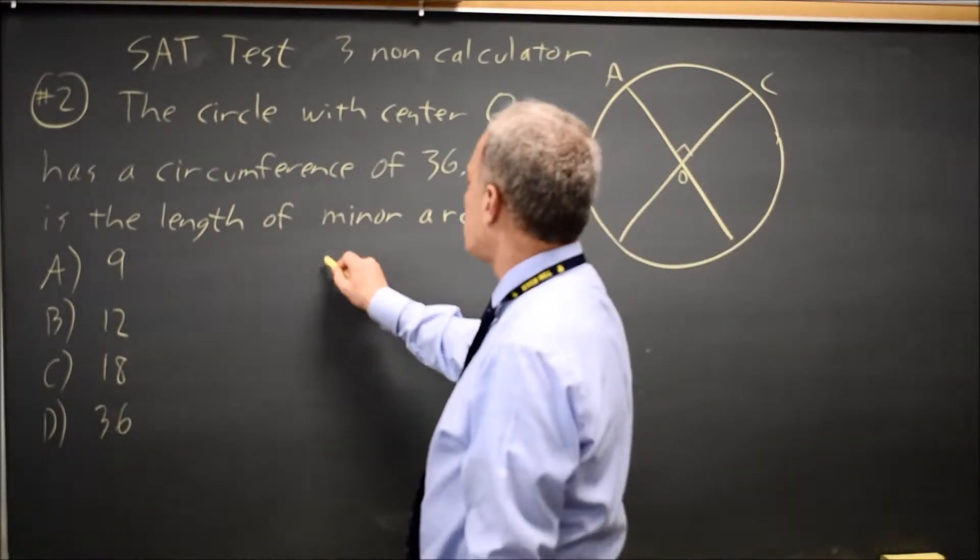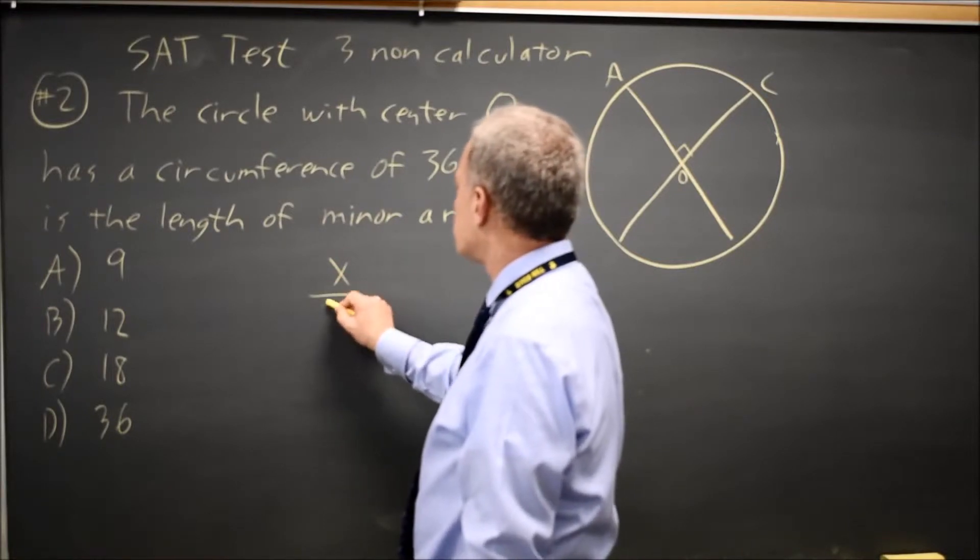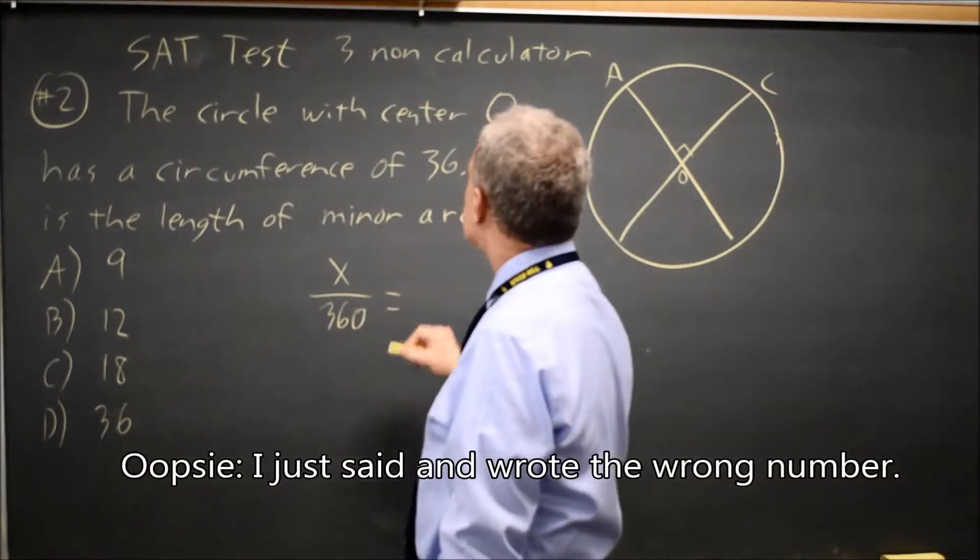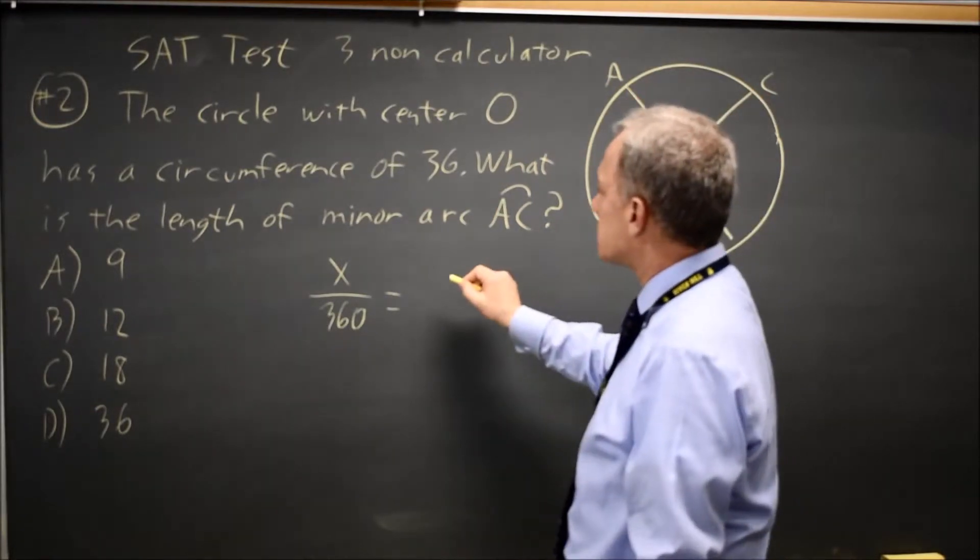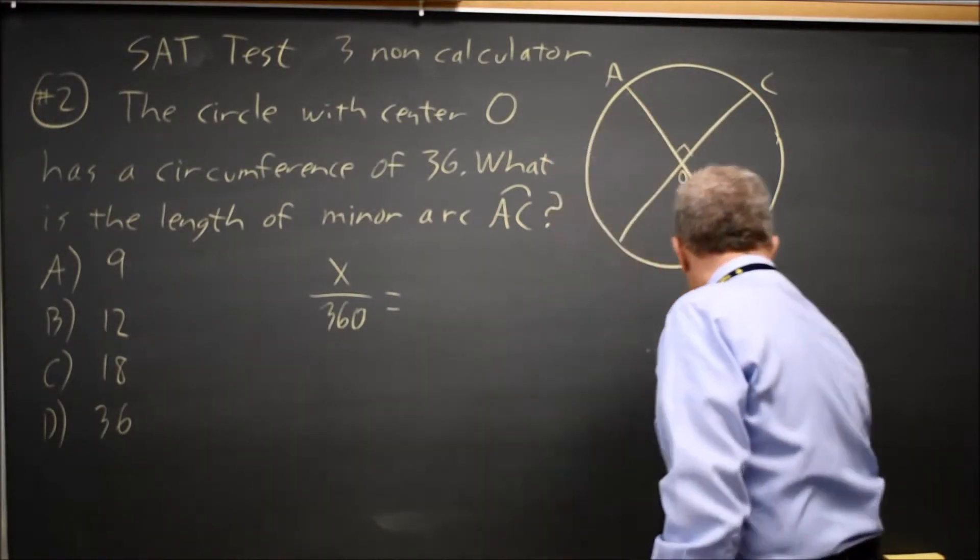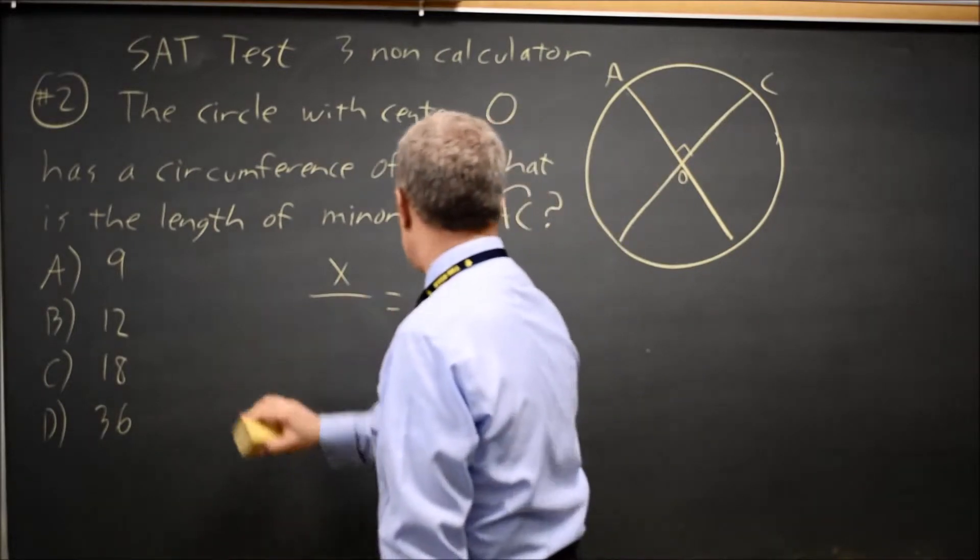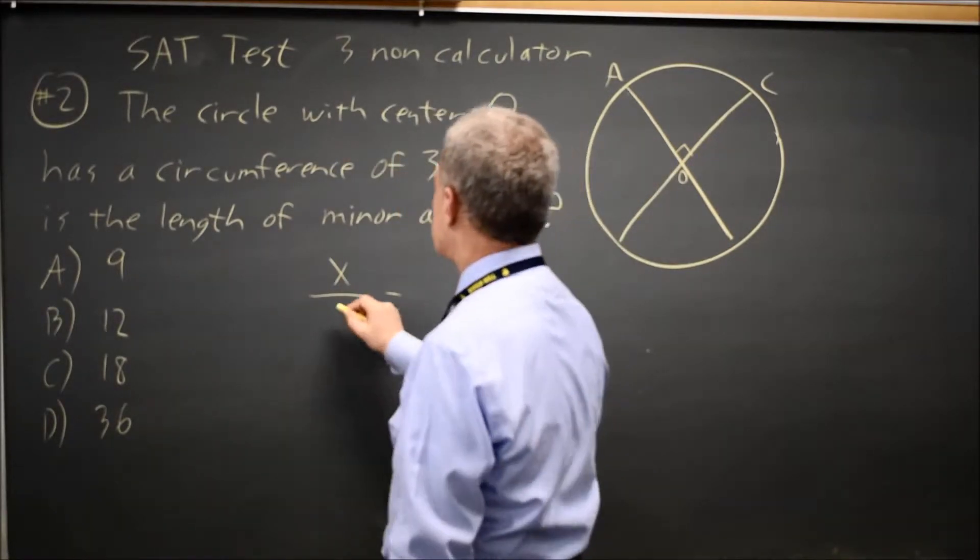So the length of this minor arc x over the entire circumference 36 is going to be equal to the angle corresponding to that arc over 360.